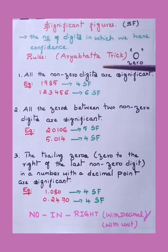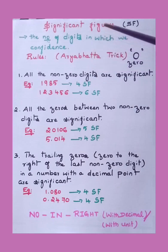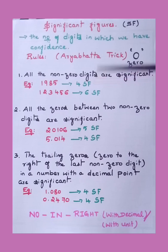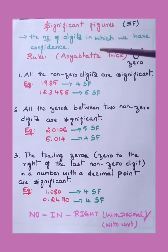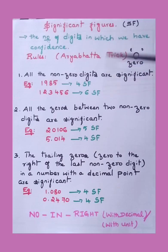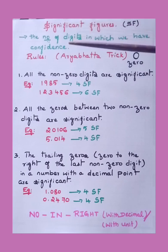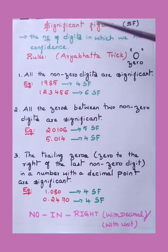We shall learn about significant figures with little tricks. In general physics, when we measure some values and take readings with instruments, you can measure only up to a certain limit. Always, some reading will be a little doubtful when making observations. So the number of digits in which we have confidence — that is the significant figures.